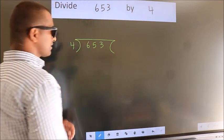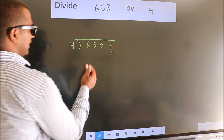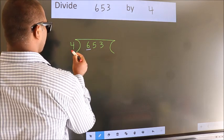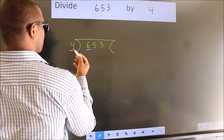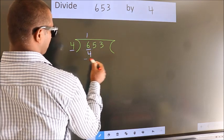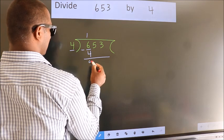This is your step 1. Next, here we have 6, here 4. A number close to 6 in 4 table is 4 once 4. Now, we should subtract. We get 2.